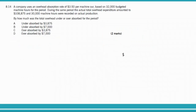Question 8.14: a company uses an overhead absorption rate of $3.50 per machine hour based on 32,000 budgeted machine hours. Actual total overhead expenditure was $108,875, and 30,000 machine hours were recorded on actual production. By how much was the total overhead under or over absorbed?